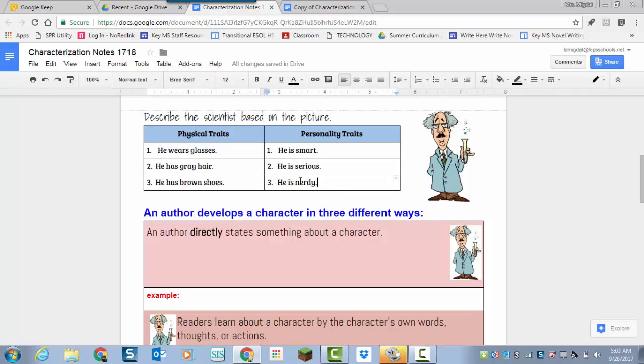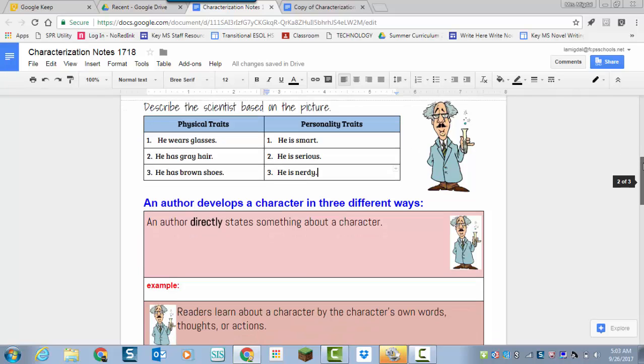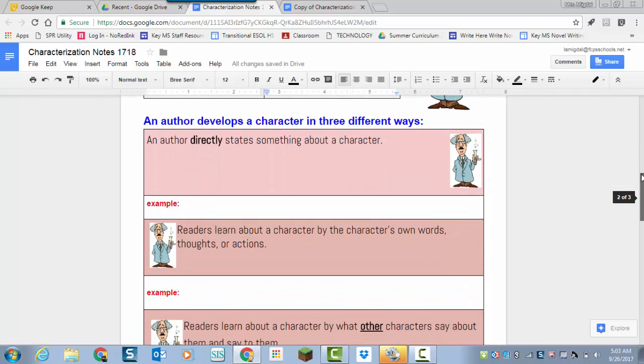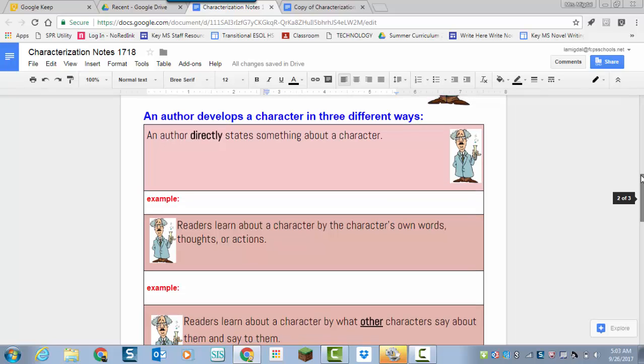So we know that characters have to have physical traits and personality traits. So now, how does an author do that? How does an author build those traits in? Well, there are three ways that an author develops a character. Okay. An author can directly state something about a character.